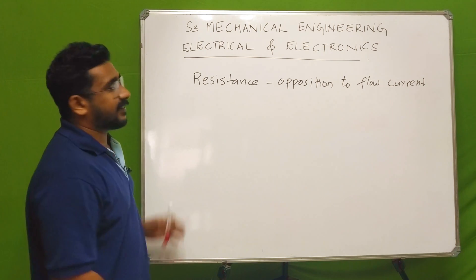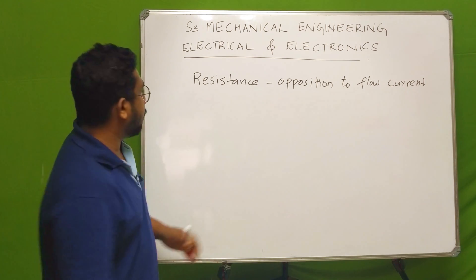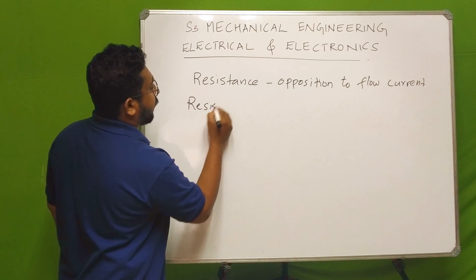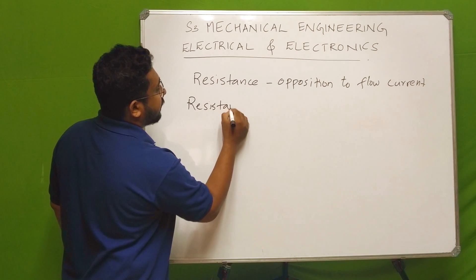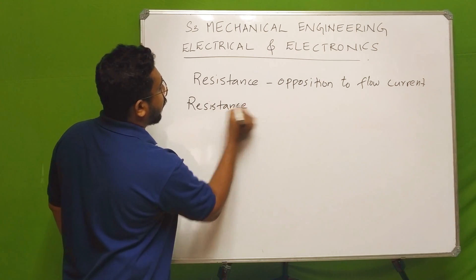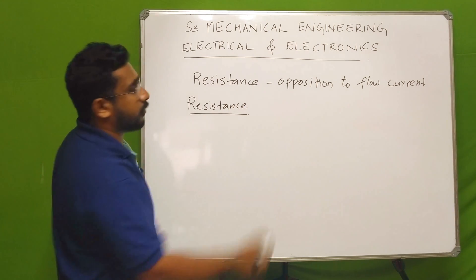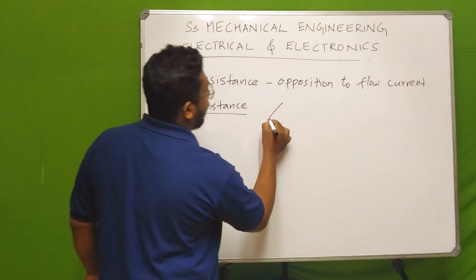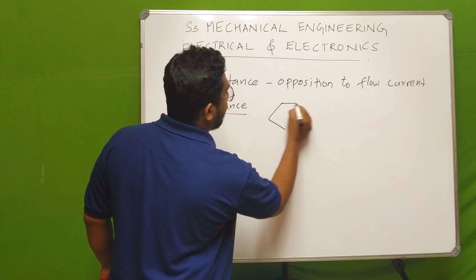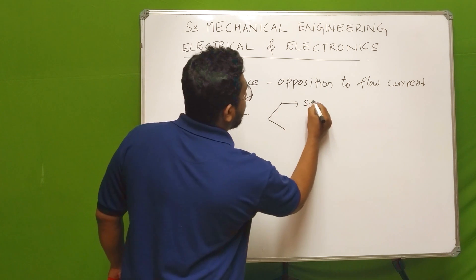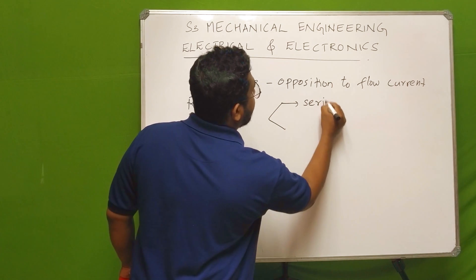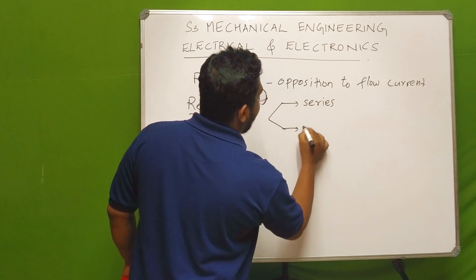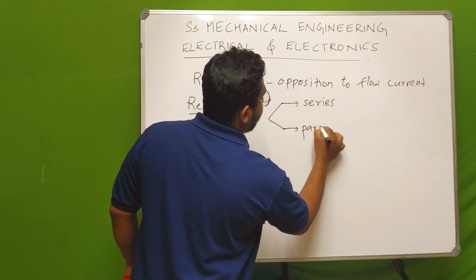We are going to do this section on resistance. Resistance: where does the current flow? One — series connection. Two — parallel connection.